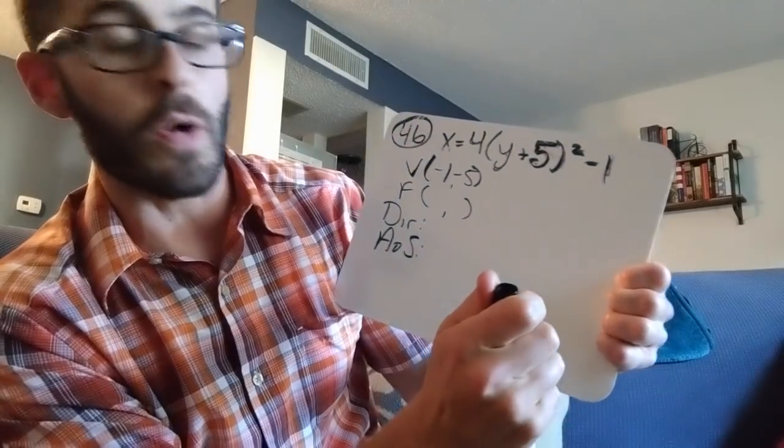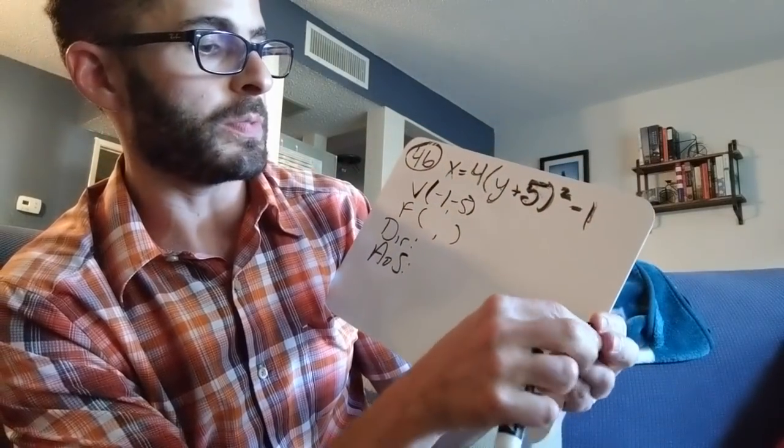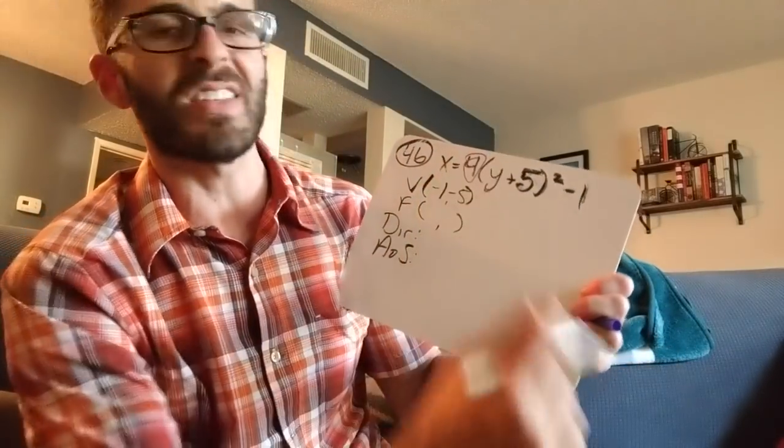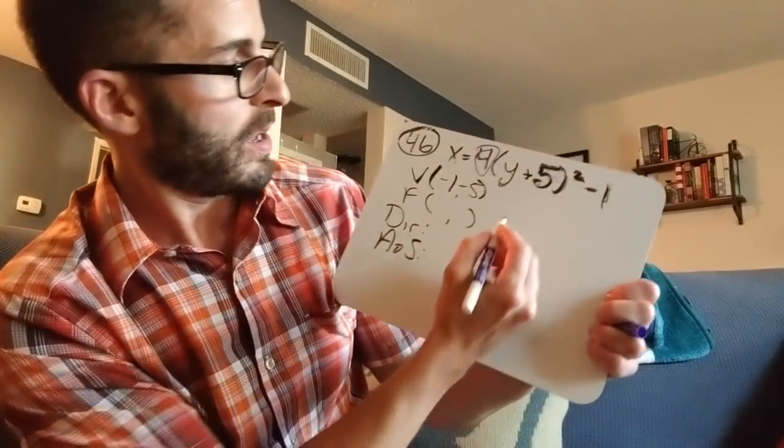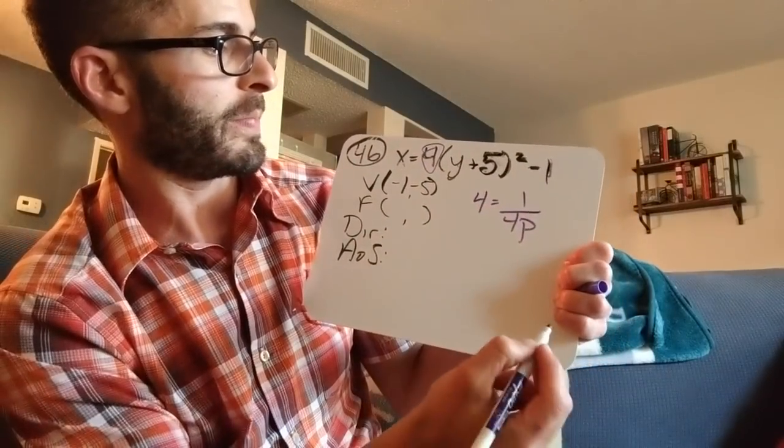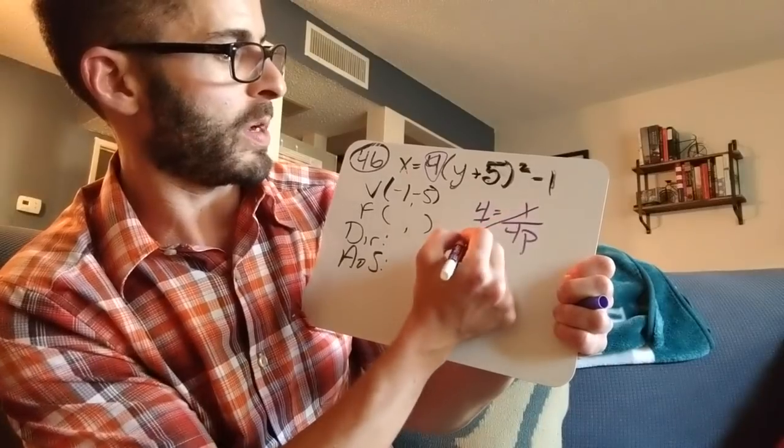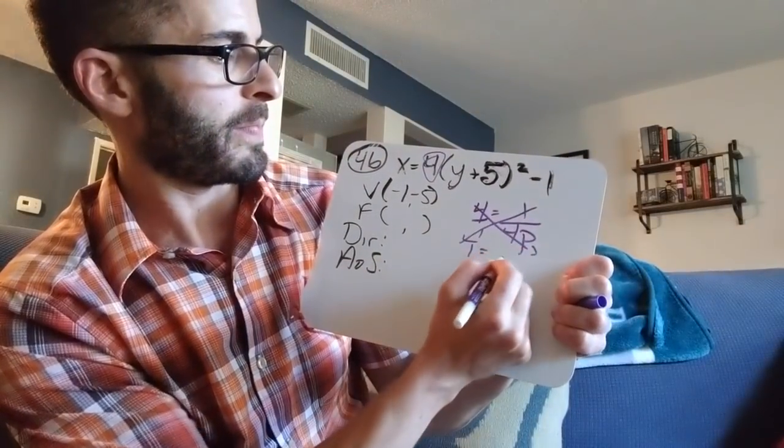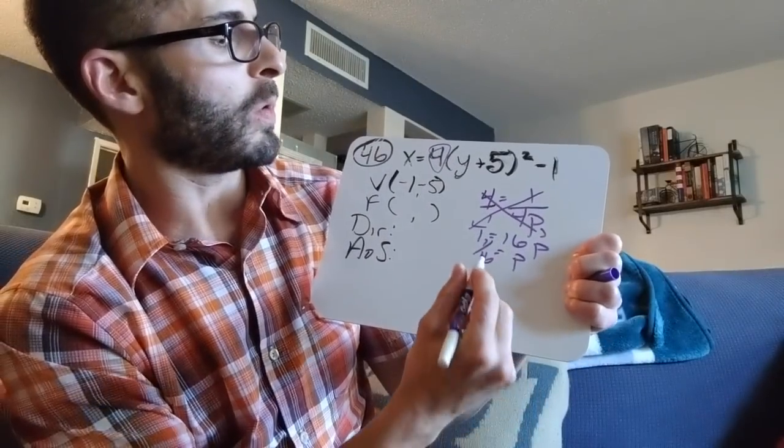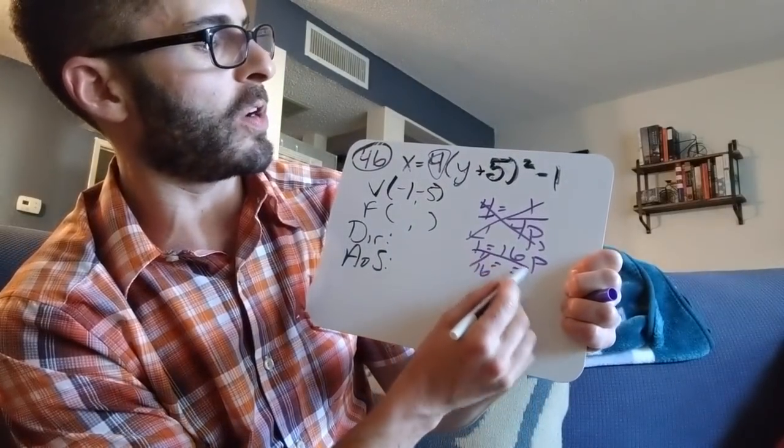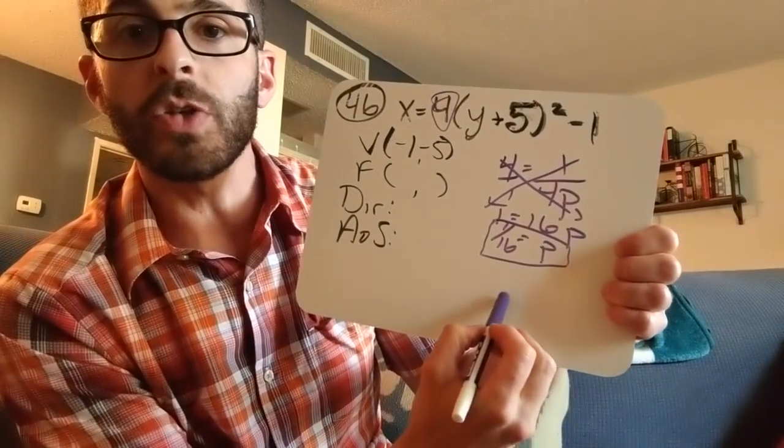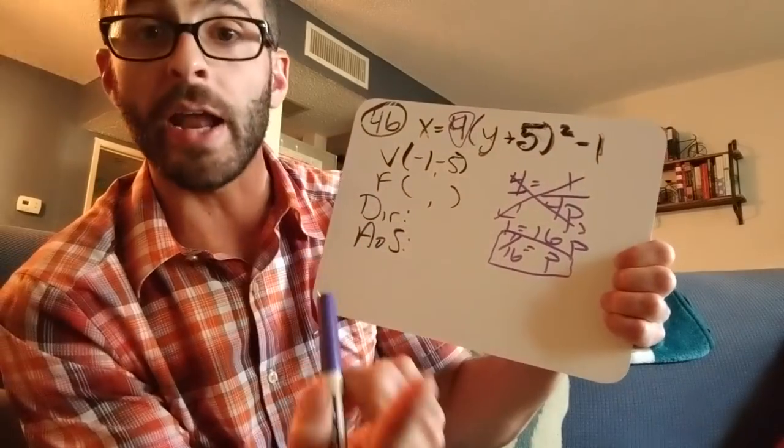All right, now I need to find my focus. So I need to find p. So I'm going to go back here. This is not as easy to do in our heads. So I'm going to form a proportion. Four equals one over four p. Make that four over one. Let's cross multiply. So p equals one sixteenth. And you're going to freak out because it's a fraction. But guess what? We're going to use mixed numbers. So p is one sixteenth. And I have to think.